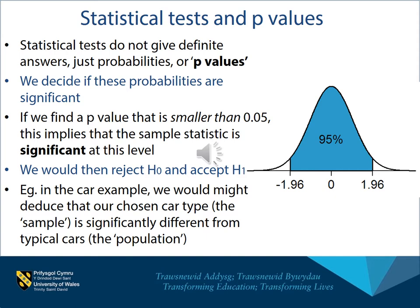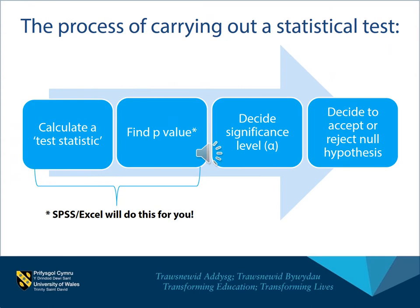In our car example, we might deduce that our chosen car type — which would be our sample — is significantly different from the typical cars, the population, if the probability we calculate is less than 0.05. When we carry out a statistical test, the first thing we do is calculate a test statistic, which depends on the nature of the test. From that we then find a P value. These days that is done by software and we don't have to worry about it — all we have to do is select the right test. Then we decide whether our P value is significant or not, apply a significance level, and having done that, we decide to accept or reject our null hypothesis.